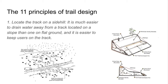The first of the 11 principles of trail design is regarding where trails are actually located. Number one: locate the track on a side hill. Slope and gradient are obviously very important for mountain biking — without them you'd have quite an uninteresting ride. Gravity creates interest, both downhill and uphill. Locating a track on the side hill makes it much easier to drain water away from the track, and it's easier to keep users on the track. We can see this quite clearly when we go to Wayne Richards.